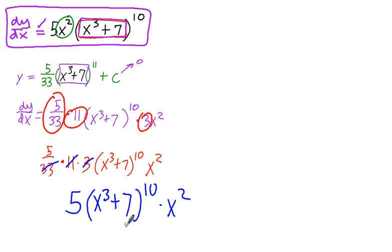When we go to compare, we've got 5x squared — check. Expression to the tenth — check. We got the correct derivative, so our anti-derivative is correct, and u-substitution achieves the victory. I hope this video is helpful to you in mastering this technique. We'll see you next time.